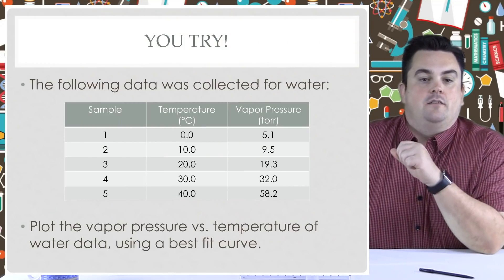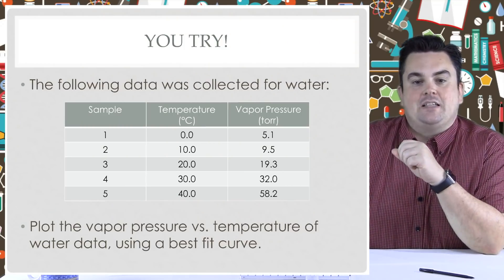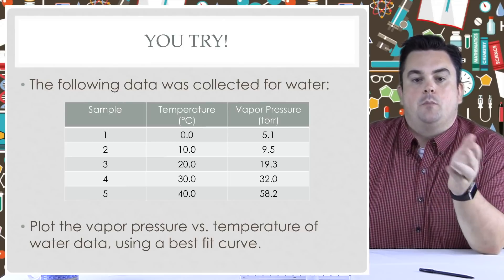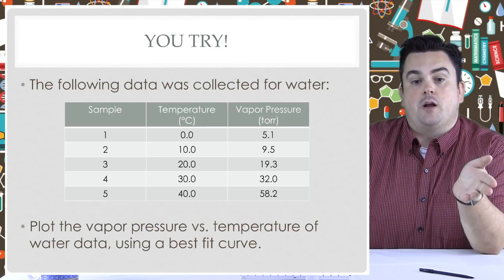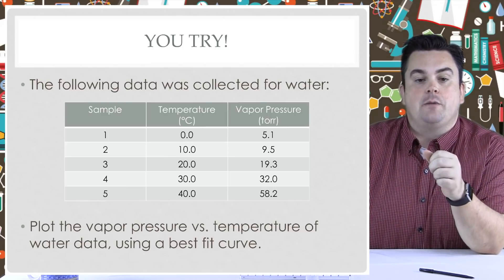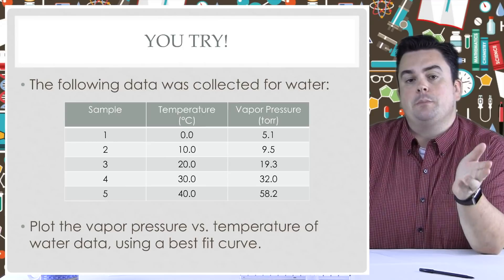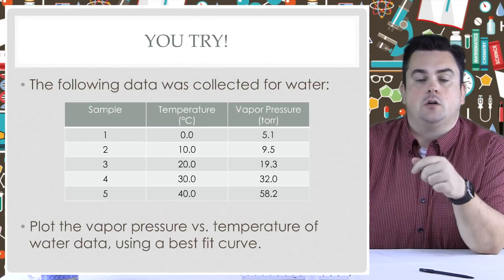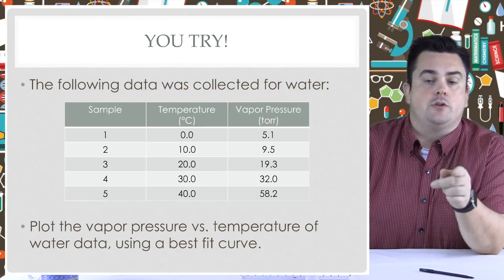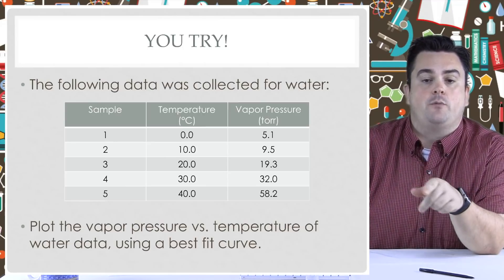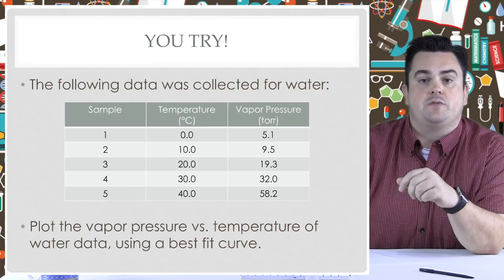You try. The following data was collected for water. Plot the vapor pressure versus temperature of water data. Use a best fit curve. Remember, don't take your pencil off the graph when drawing that best fit curve, and don't use a straight edge either because it's a best fit curve.